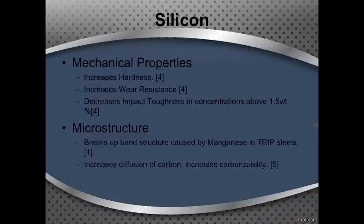Silicon is a very common element used to alloy steels. The mechanical properties it influences are hardness, which tends to increase, and wear resistance, which also increases. It decreases impact toughness when the concentration of silicon rises above 1.58%. Microstructurally, it breaks up the band structure seen in manganese and TRIP steels. Adding silicon can restore some of the ductility lost from manganese banding. The silicon-to-manganese ratio in TRIP steels should be around 1 or higher, as decreasing silicon content below that will not have much impact on breaking up those bands. Similar to molybdenum, silicon also increases the diffusion of carbon in iron, improving carburizability for parts being carburized to improve surface hardness.